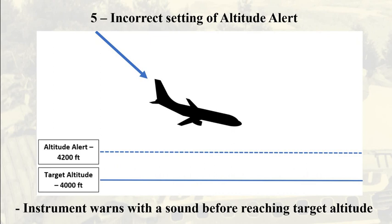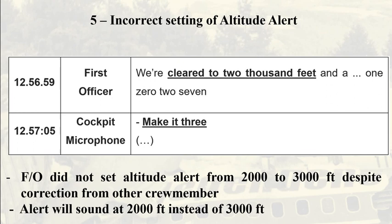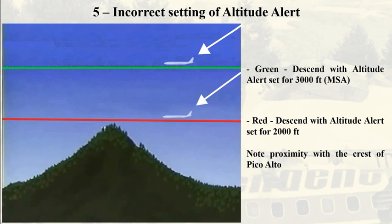Incorrect setting of the altitude alert. The altitude alert is an instrument that warns the crew before approaching or deviating from a target altitude. In this example, if the plane is descending and the alert is set to 4,000 feet, the alert will sound at 4,200 feet — 200 feet before reaching the target altitude. In the jet's cockpit, after receiving the ATC clearance to 3,000 feet, the first officer repeated what he understood as a clearance to 2,000 feet. Another crew member, likely the captain, corrected the figure to 3,000 feet. Regardless, the first officer still set the altitude alert to 2,000 feet. This meant that instead of the crew being warned they were about to reach the minimum sector altitude of 3,000 feet, the jet was now descending below that, and the altitude warning would sound near 2,000 feet and not 3,000.